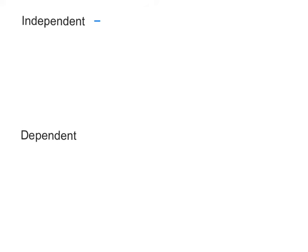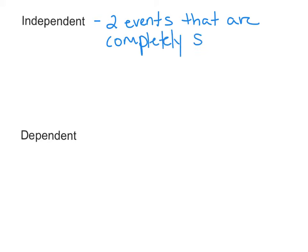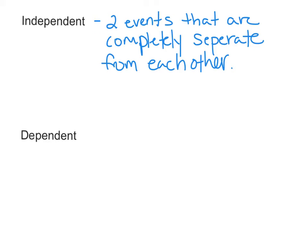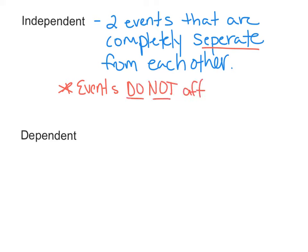In this video, we're going to take a look at independent versus dependent compound events when dealing with probability. Independent events are two events that are completely separate from each other. For example, if you are going to draw a card from a deck of cards and then roll a die, what you roll on the die has nothing at all to do with what card you drew from the deck. So those are two completely separate events — they do not affect one another.